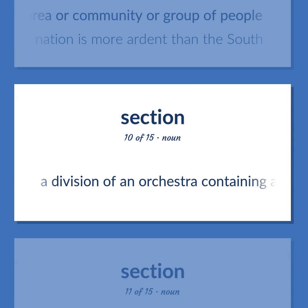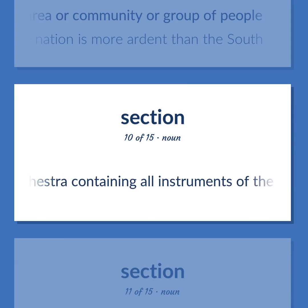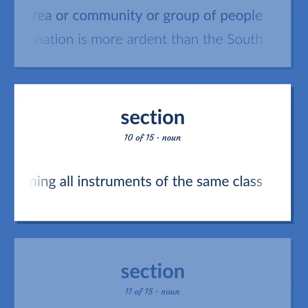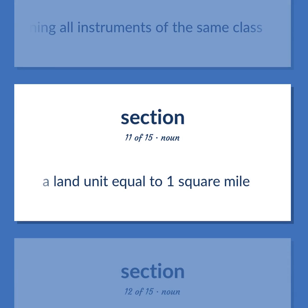Section: a division of an orchestra containing all instruments of the same class. Also, a land unit equal to one square mile.